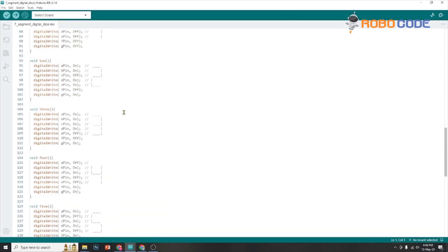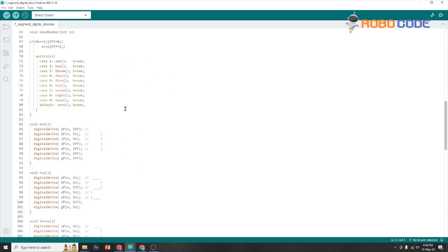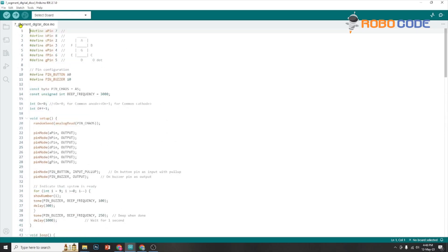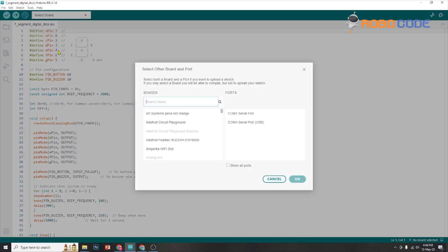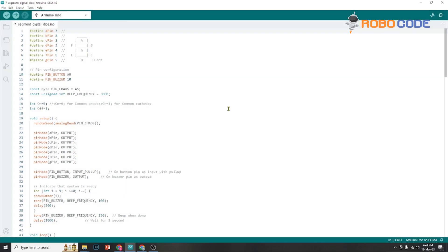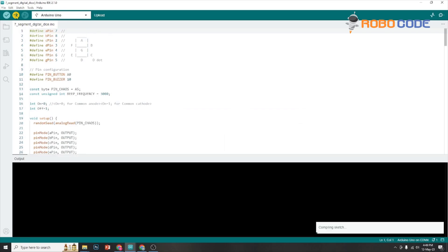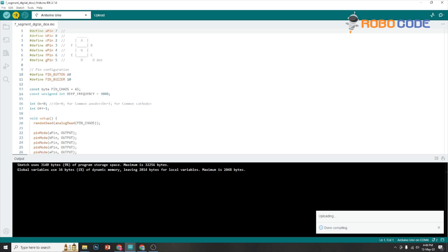Once this is done, you will search Arduino UNO from the search and select the COM port serial port where the USB is connected. After selecting the Arduino UNO port, you will click on the OK button. Once that is done, we will click on the right arrow icon which will compile the code and upload it. If there are any errors, it will show in the black screen.